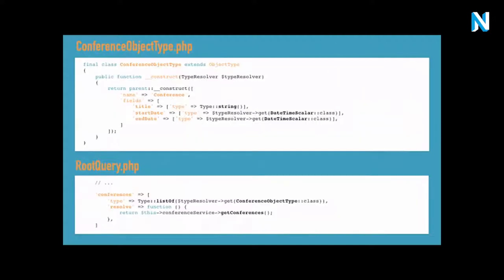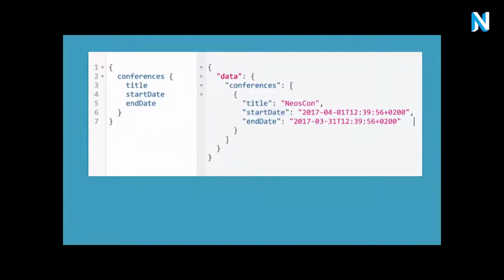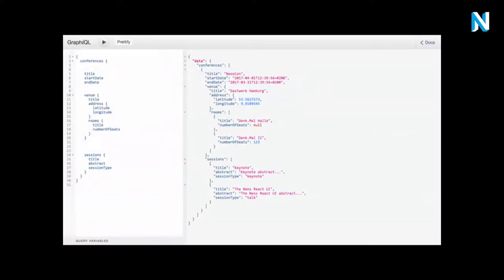To implement that in our conference website, we create a GraphQL type definition for each of the entities and properties we want to expose to the API, then add fields to the root query. We have a conference object type with its properties, and a conferences endpoint that returns a list of these types, using our existing services to fetch them. That's all we need to list all conferences with their titles and dates. The real power comes with deeply nested queries — for example, listing all conferences with their dates, the venue with geo-coordinates, rooms, and all sessions, all with just one query.